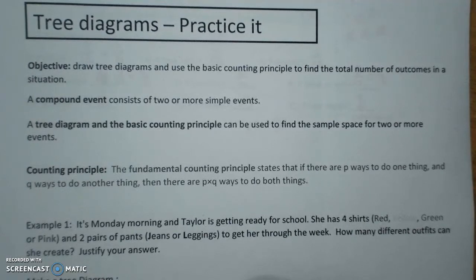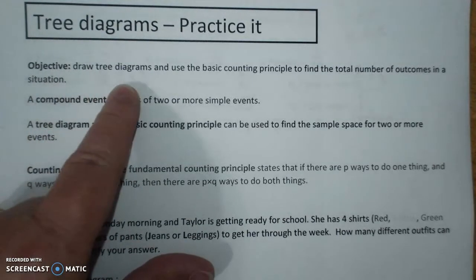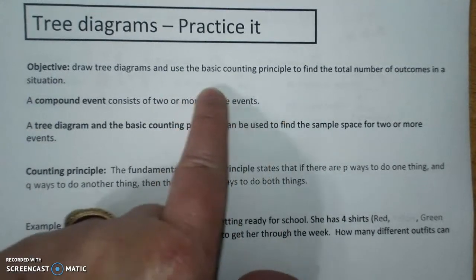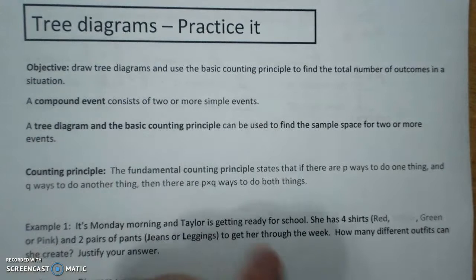1, 2, 3, 4, 5, 6, because those were the possible outcomes. So your objective is to draw a tree diagram and use the basic counting principle to find out the total number of outcomes in a situation.